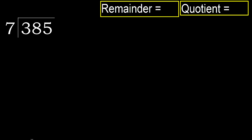385 divided by 7. 3 is less, therefore next. 38 is not less, therefore we work with 38.